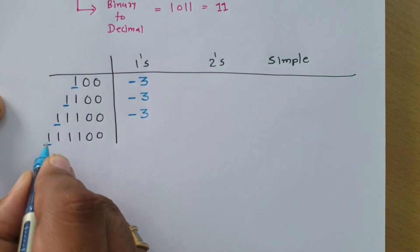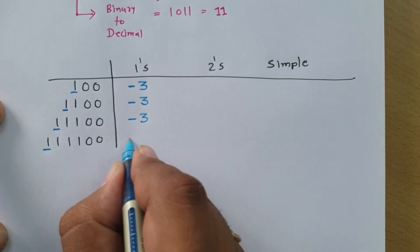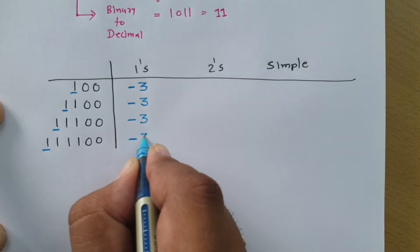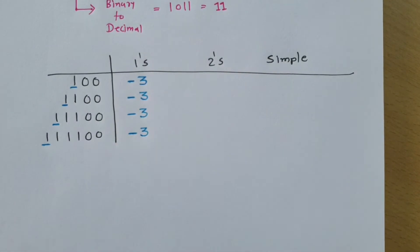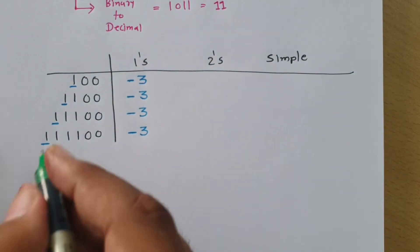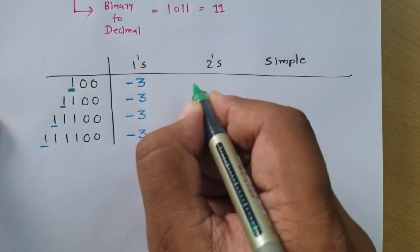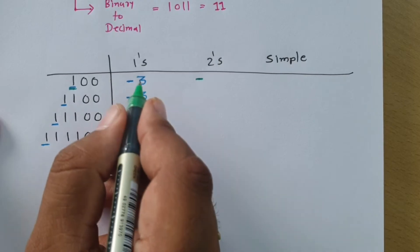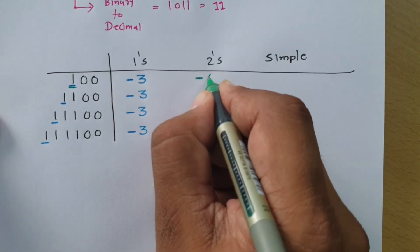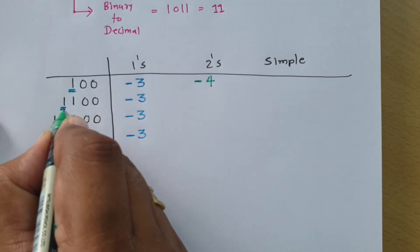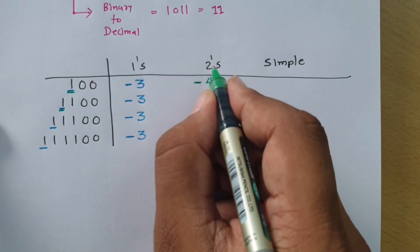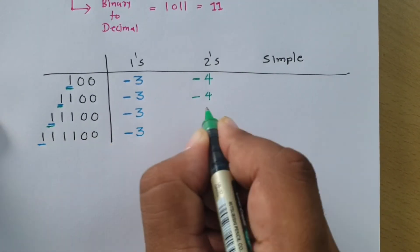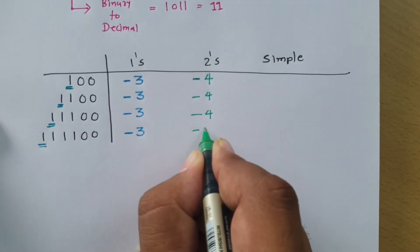For two's complement, we check the first bit, which is one — indicating negative sign. Two's complement equals one's complement plus one. Since one's complement gave minus 3, adding one gives minus 4 for two's complement sign representation. This applies across the series of numbers: the two's complement sign representation is consistently minus 4 for those negative numbers.